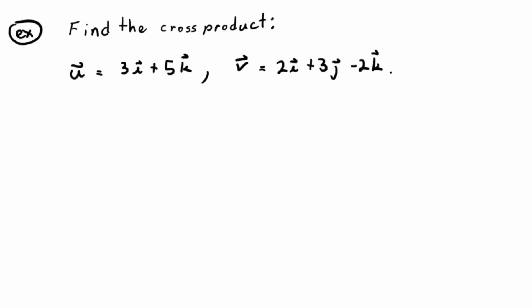Find the cross product: u is 3i plus 5k, v is 2i plus 3j minus 2k.